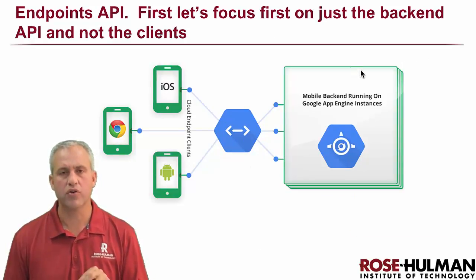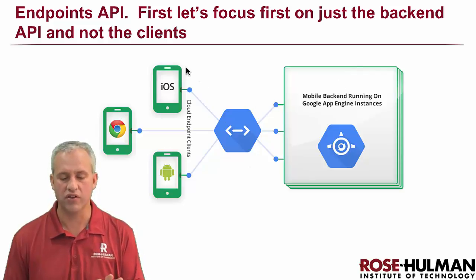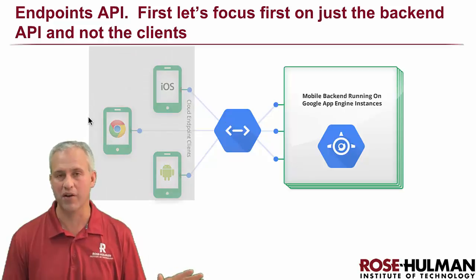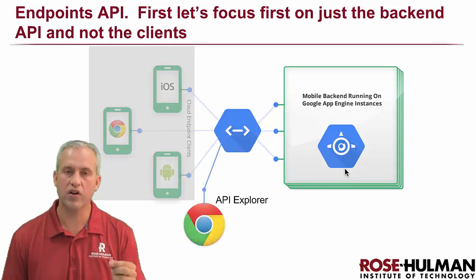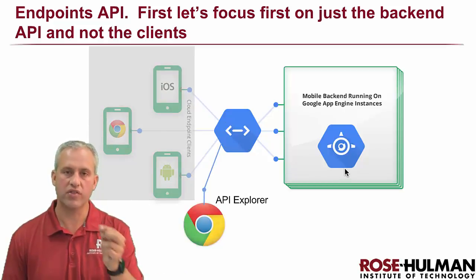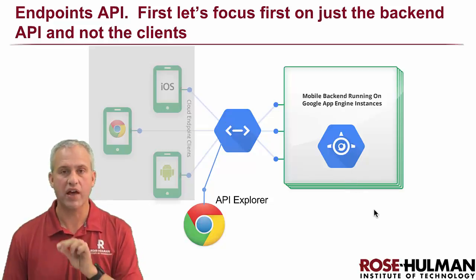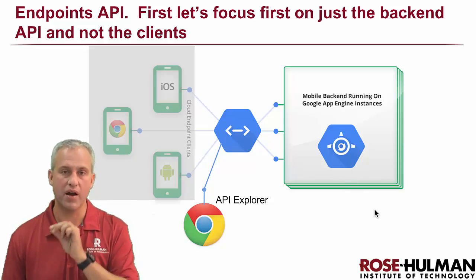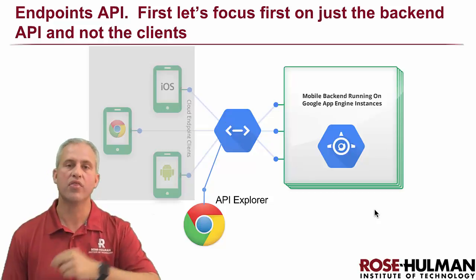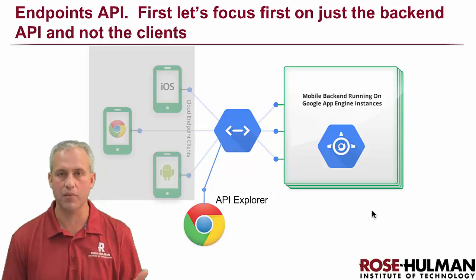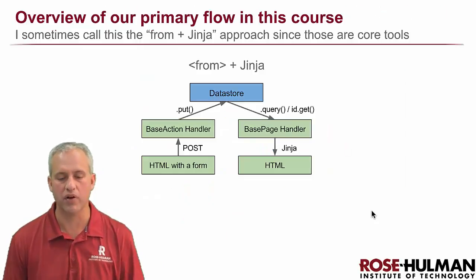What we're going to focus on first is not any of the clients — we don't care about any of the clients. In fact, we're going to only ever make a web client. We're going to do our testing with the API Explorer. That was the tool I showed you at the end of the last video. Once we get our API perfect with the API Explorer, then we'll go implement a client, and that division of labor can be really nice.